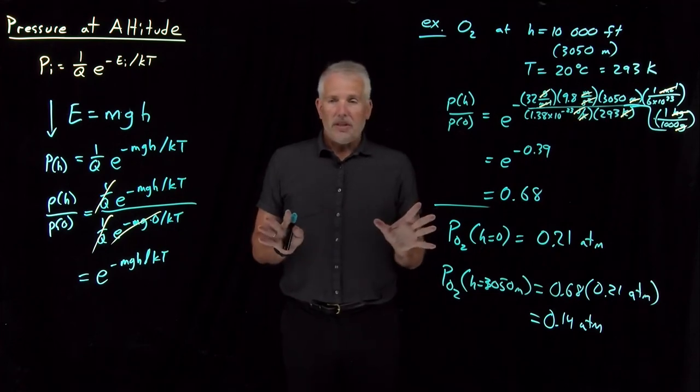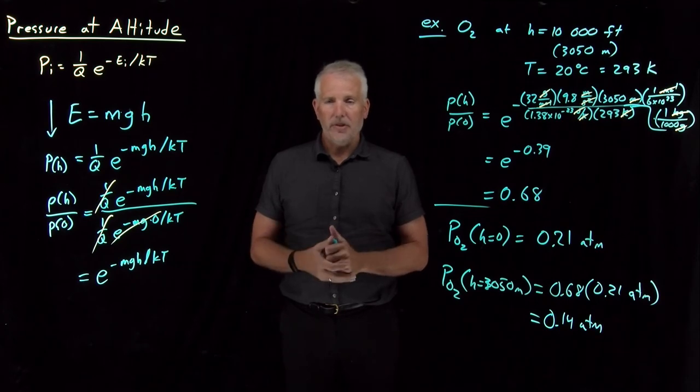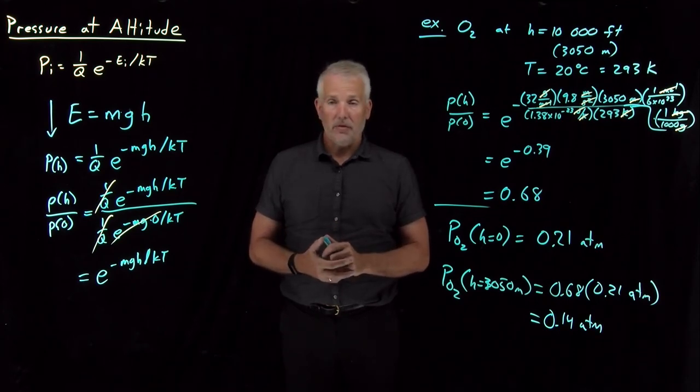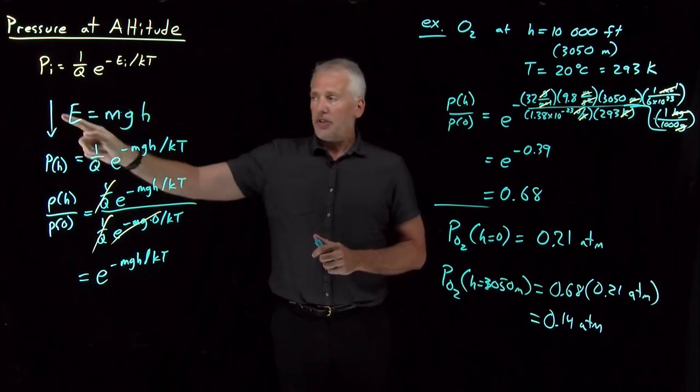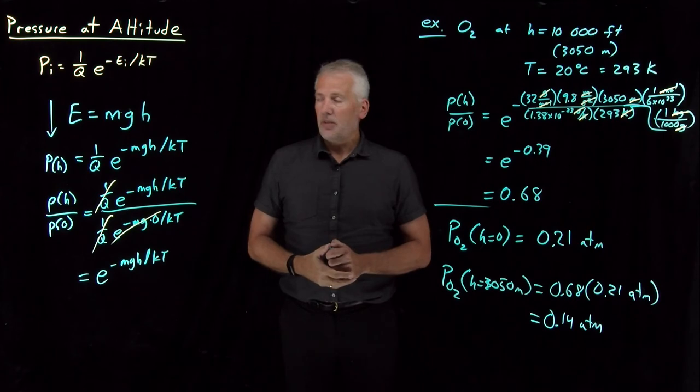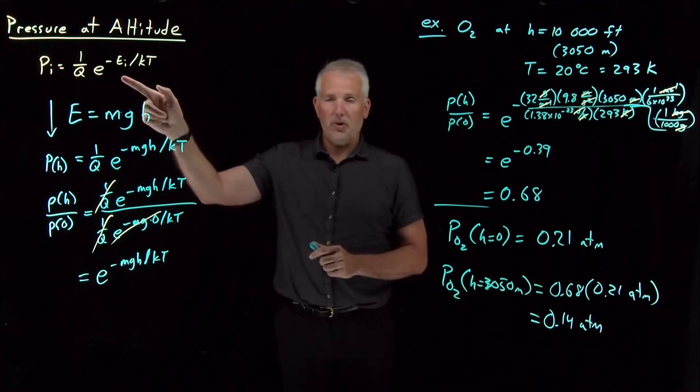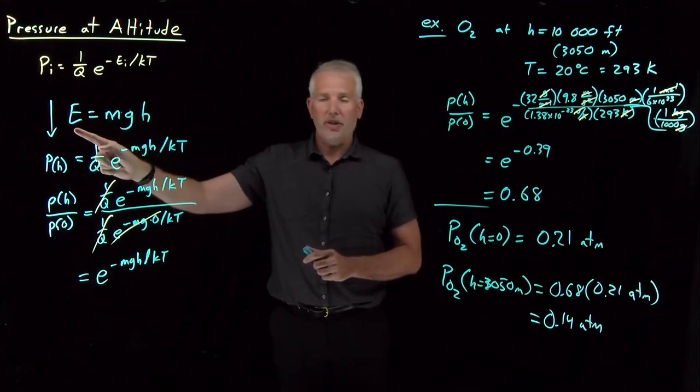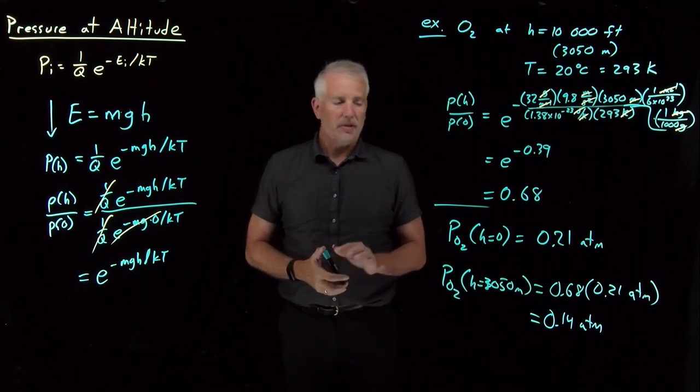But in a broader sense, this example points out, if you compare this with the example we did previously of the butane conformational probabilities, once we have the Boltzmann distribution, any type of energy a molecule has or a system has, whether it's gravitational energy, conformational energy, some other type of energy, a lot of what we do going forward in this course will be using the Boltzmann distribution with different types of energy that molecules can have to explain different types of behavior of different chemical systems.